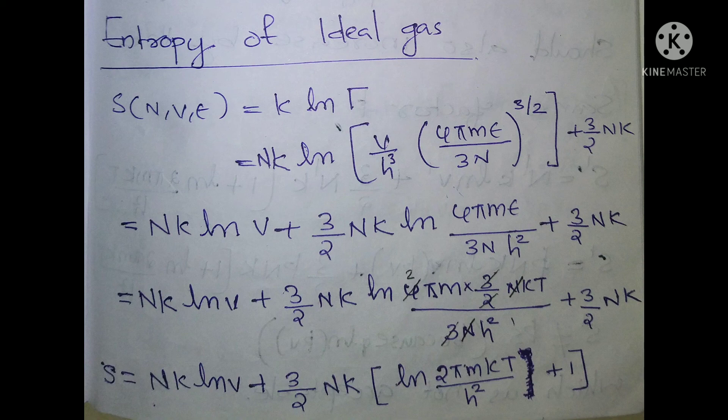That's why we separate V over h-cubed. Then h-cubed is raised to 3/2, and we put 3/2 into the power. Then we put 2/3 into multiply, and h-cubed becomes h-squared. That's why we separate the V. Then, adding the terms: nk log V plus (3/2)nk log(4πmE divided by 3n·h²) plus (3/2)nk.